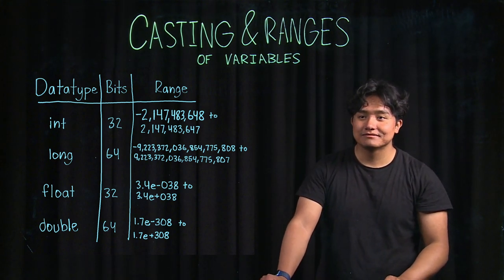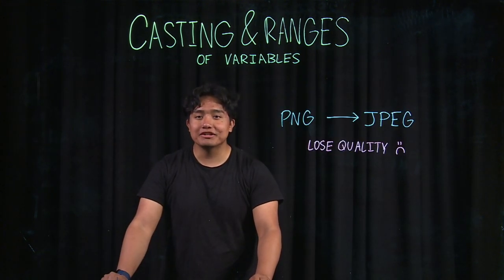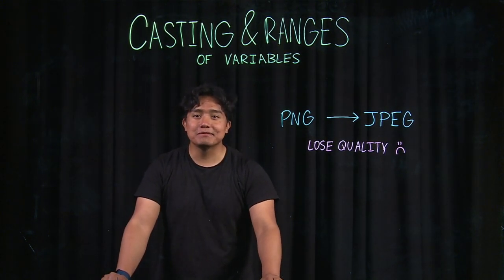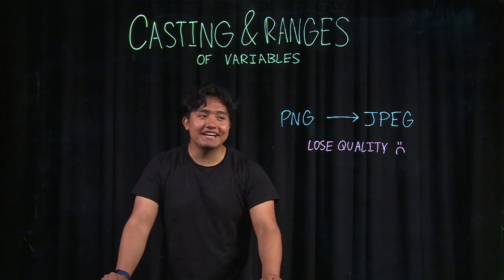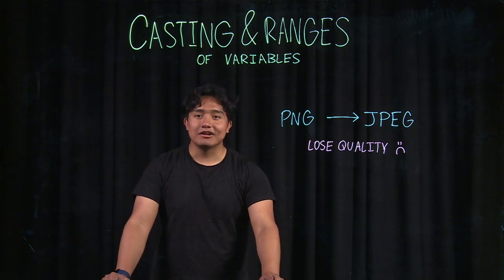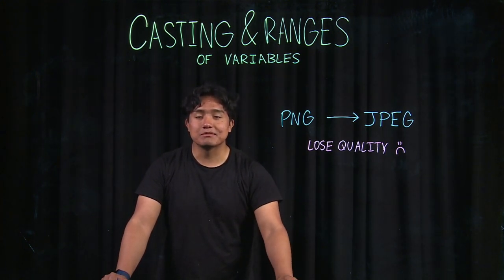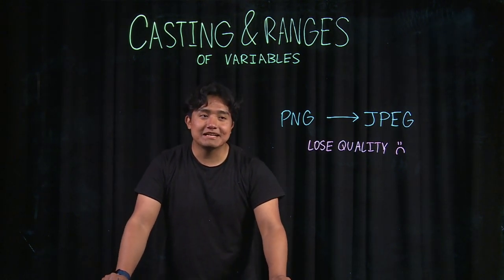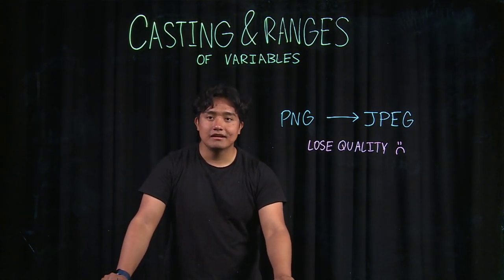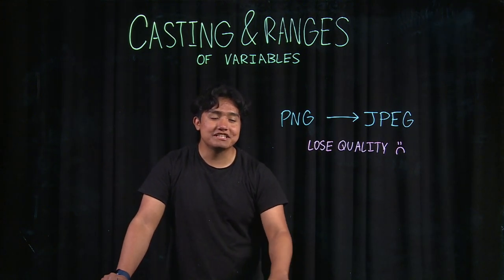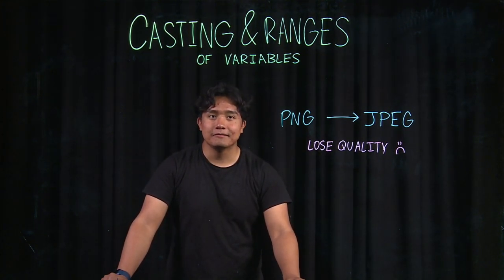The process of casting and converting data types reminds me of converting image files. In my free time I like to make websites, and a big problem I have is that some files are really large, so they take a long time to load. I have to convert them into smaller files to load faster. One example would be PNG to JPEG. Whenever I do that, I lose quality in the image because PNG is a higher quality file than JPEG, so there's a chance you lose quality there.